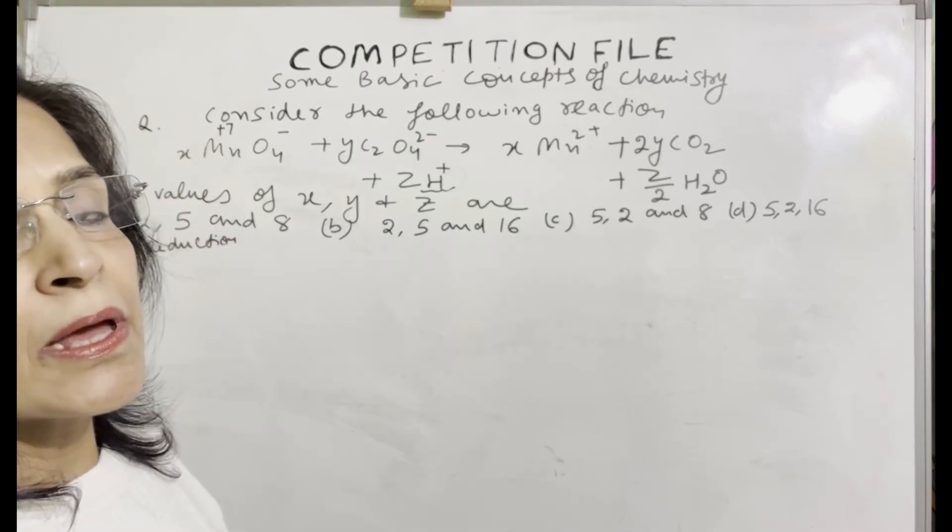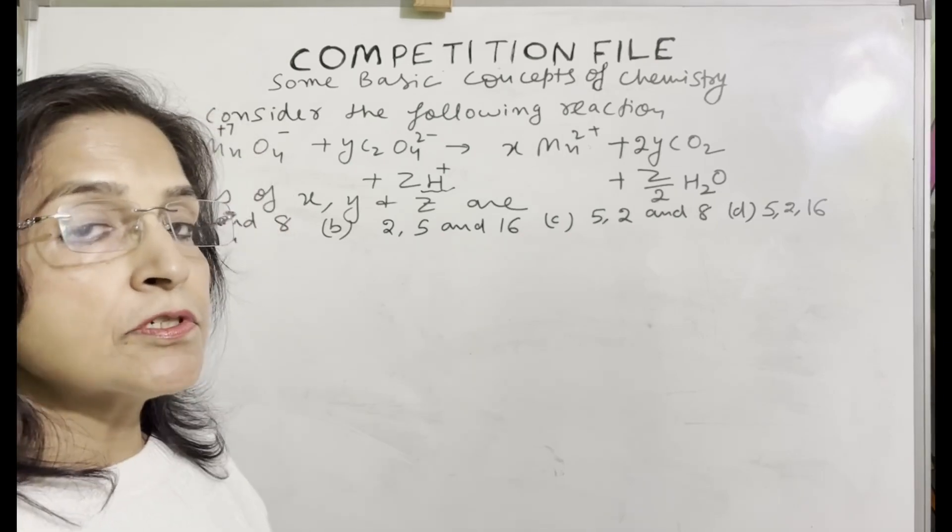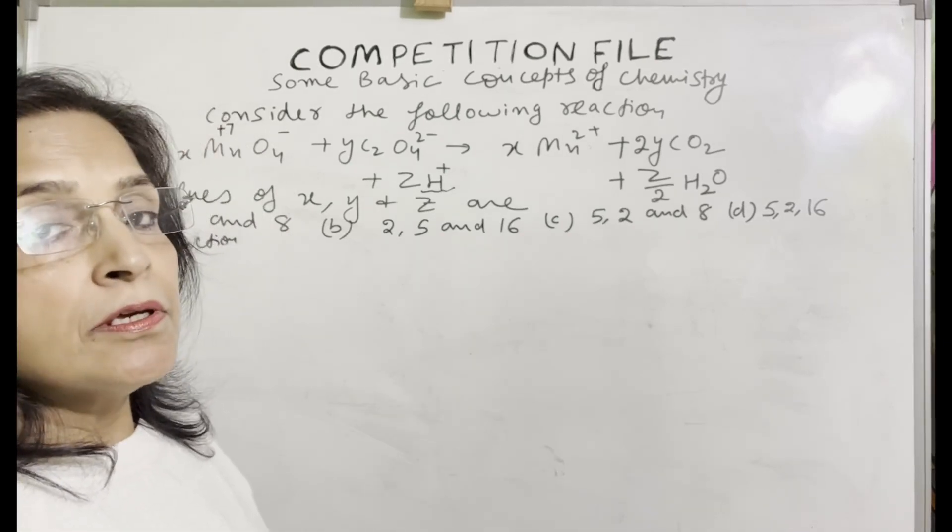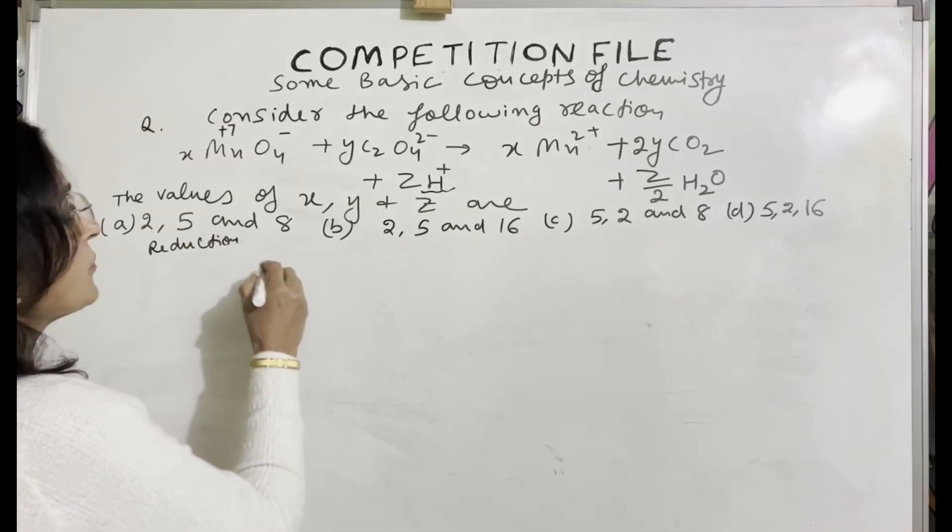To balance the redox reaction, divide the reaction into two half equations, then balance them separately and then add. So these two half equations are: